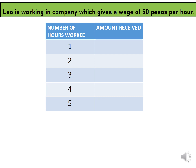The number of hours worked is our input — in algebra, we call this the independent variable. The result or output — in algebra, we call this the dependent variable. If Leo works for one hour, he will receive 50 pesos. For 2 hours, 100; for 3 hours, 150; for 4 hours, 200; and for 5 hours, 250 — with 50 as our constant multiplier.